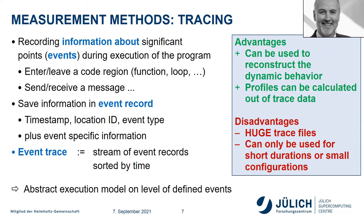If tracing has such big advantages, why isn't everyone using it instead of profiling? It's quite simple: if every time a function is called or a message is sent you write something down, and you do that for a longer time in a parallel program with many processes and threads, the data gets quickly out of hand — we're talking gigabytes, terabytes, petabytes of data. So tracing is typically only done for short durations, like one or two iterations of a larger program, or on a smaller number of processors. Typically you do profiling first to get an overview, and only if the profile doesn't give enough detail do you do selected tracing.